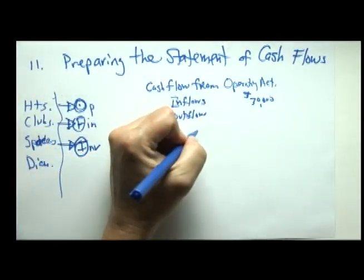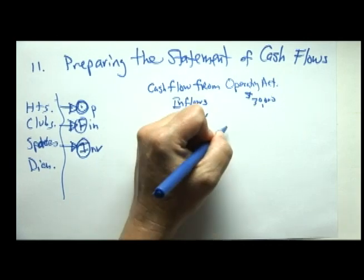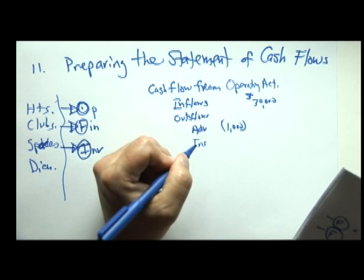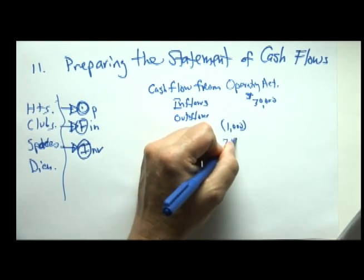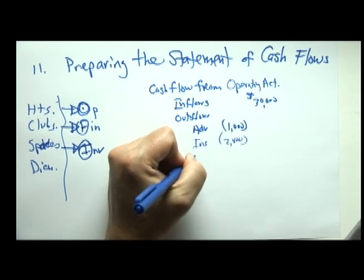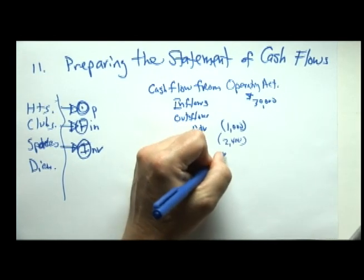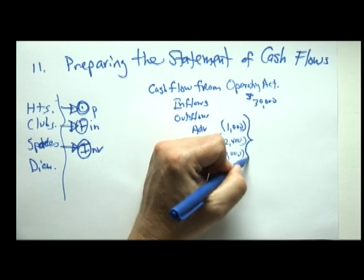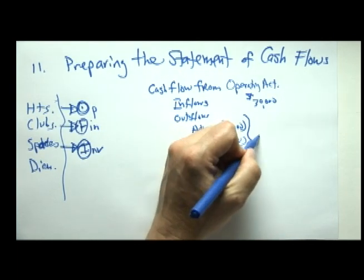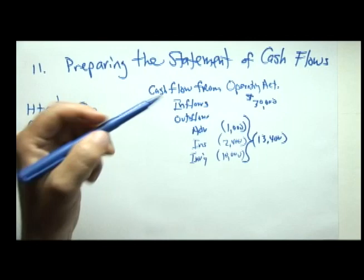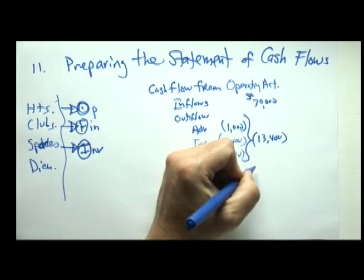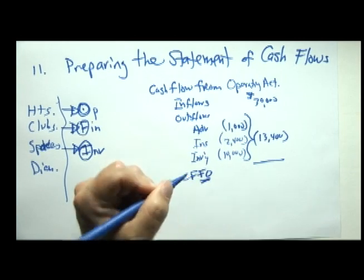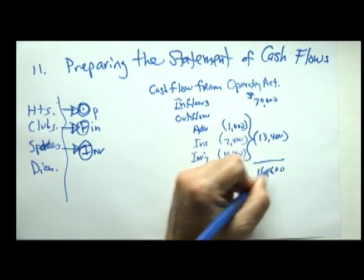So let's go. Advertising was $1,000, insurance was $2,400, and the purchase of inventory was $10,000. So cash flow outflows from operations was $13,400. Cash inflows was $30,000, so our net cash flow from operations was $16,600.